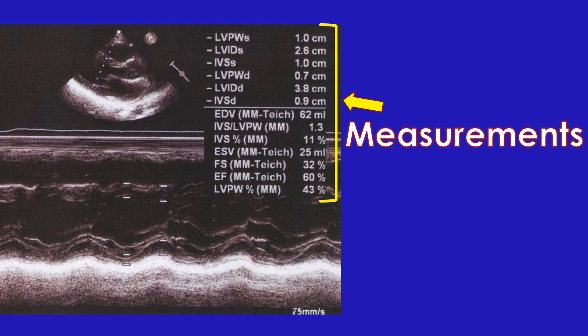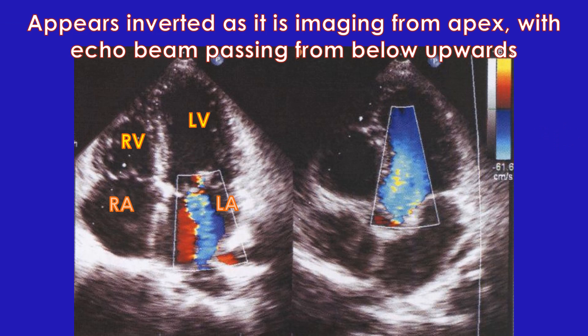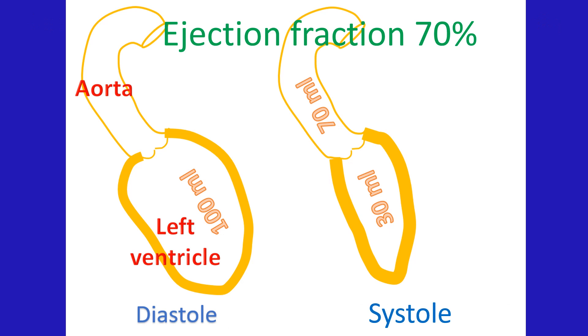This is especially important when checking measurements of coronary arteries in a case of suspected Kawasaki disease. In addition to the measurements, there will also be a qualitative report on whether the chambers are dilated or hypertrophied and whether they are contracting well or not. In case of the left ventricle, regional wall motion abnormality will be mentioned in detail if present.